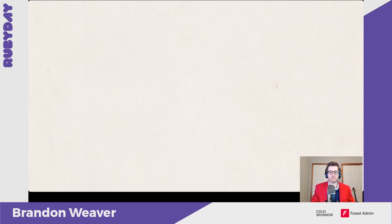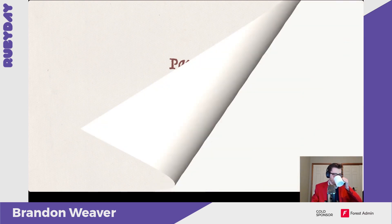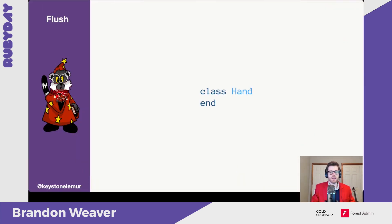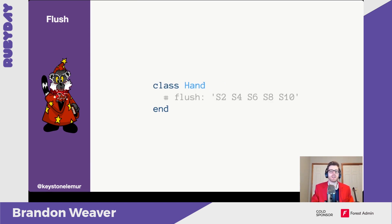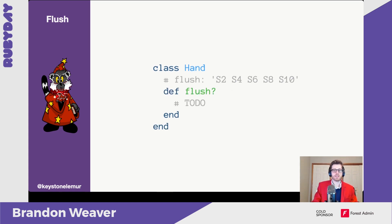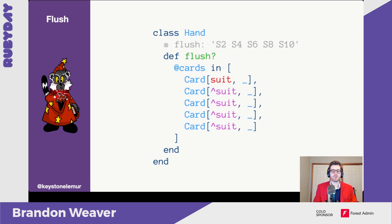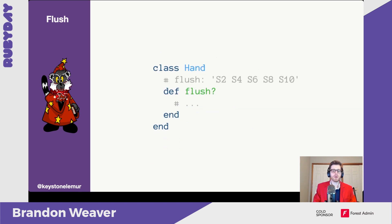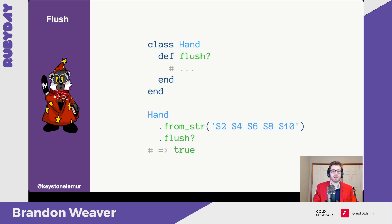Next we have a flush — all cards are of the same suit. Going back to our hand, we define a flush method and then match against all the cards inside that hand to find out if it is the same suit across all those cards — capturing the first and pinning the rest to make sure those suits are all the same. We don't necessarily care about the rank because a flush just checks the suit. Testing against that, we find out our example is indeed a flush.